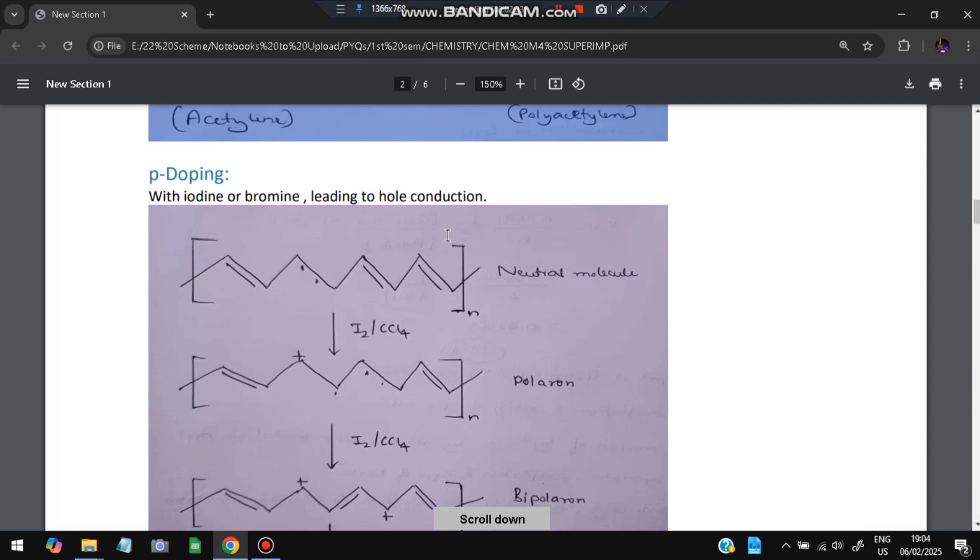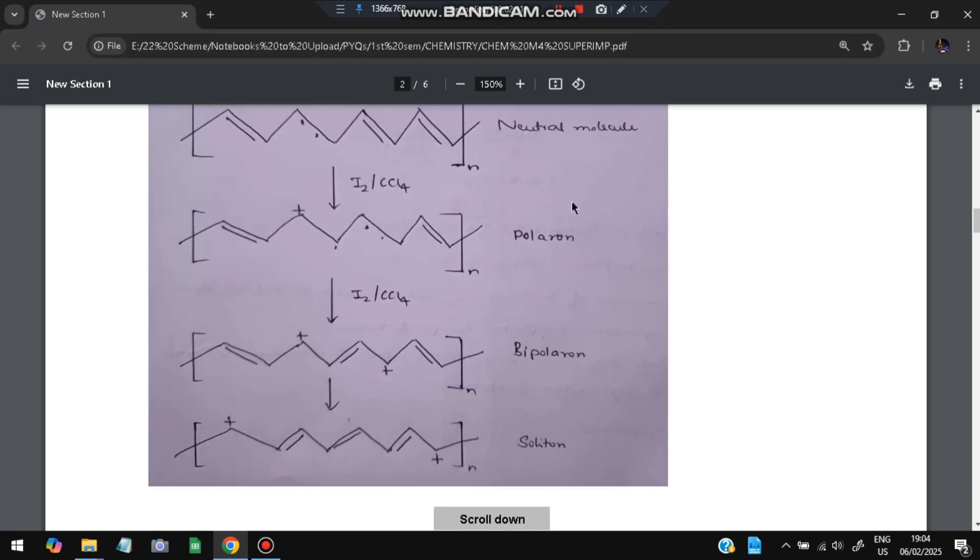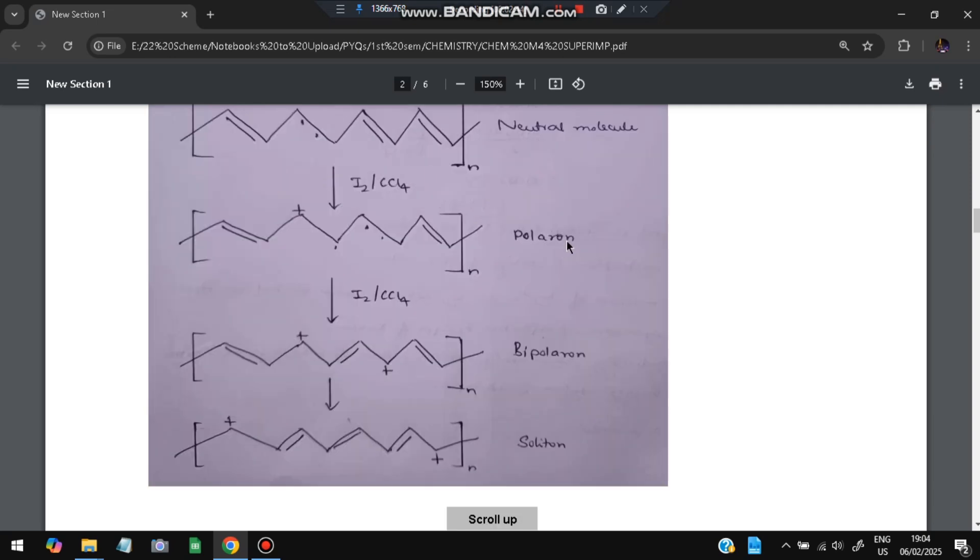And there are two types: p doping and n doping. In p doping with iodide or bromine leading to hole conduction. So this is a neutral molecule and when conducted with iodide, polaron is formed. With another I2 if we conduct it, it becomes bipolaron and finally it becomes soliton. This is the diagram you need to make.